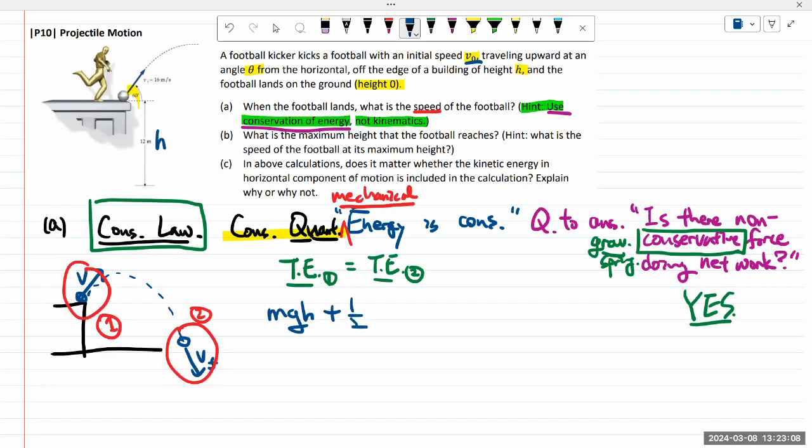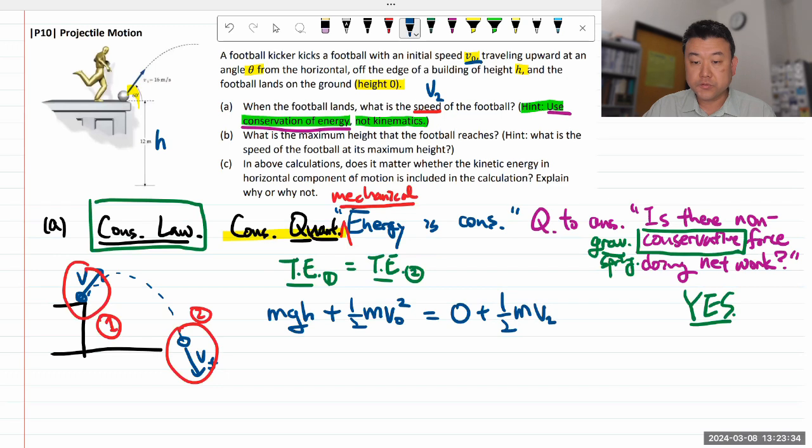So writing it all out, I have gravitational potential energy. This is at some height, so it's going to be mgh plus kinetic energy, initial speed of v naught. So it'll be one half m v naught squared is equal to, and then the final total energy will be, it's at height zero. So the gravitational potential energy will be zero, plus the final, let's label this v2.